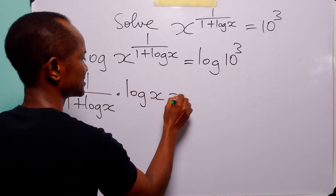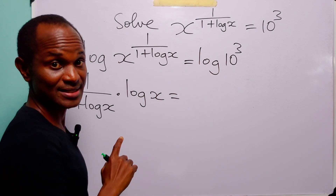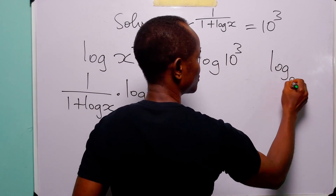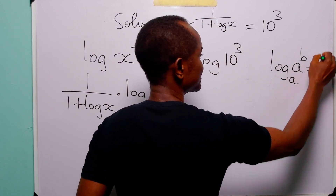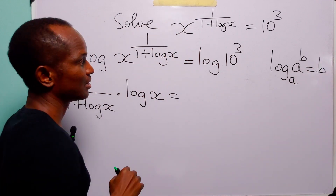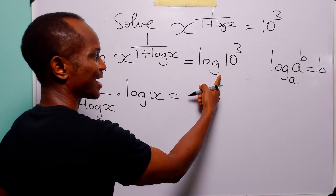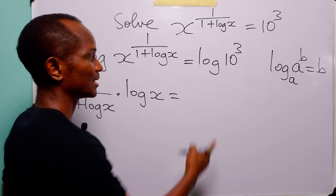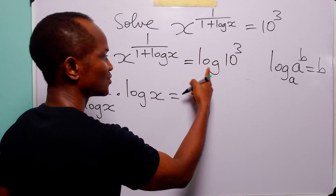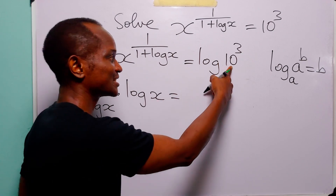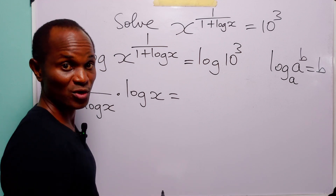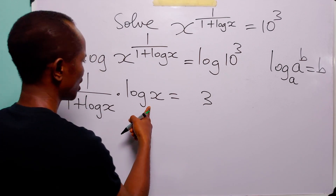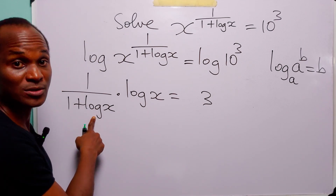...log x is equal to. Now look at the right hand side and remember that log_a(a^b) is simply equal to b. And of course when we write log without specifying the base it means we are working in base 10 — common logarithm. So this is basically log base 10 of 10 to the power 3, and it is going to be equal to 3.